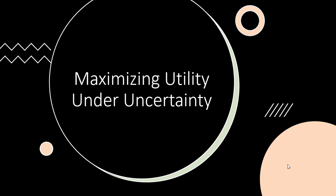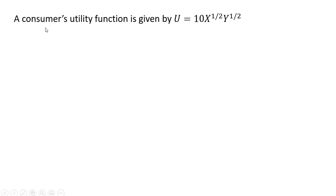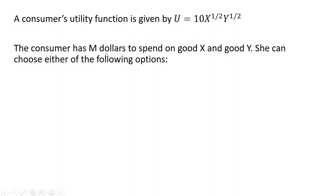Let's look at maximizing utility under uncertainty. A consumer's utility function is given by U = 10X^(1/2)Y^(1/2). The consumer has M dollars to spend on Good X and Good Y, and she can choose from either of the following options.